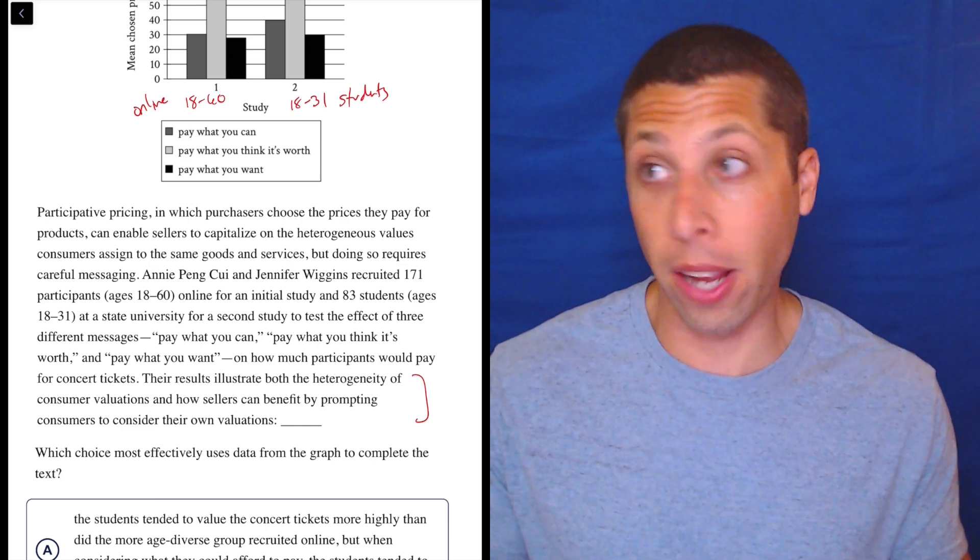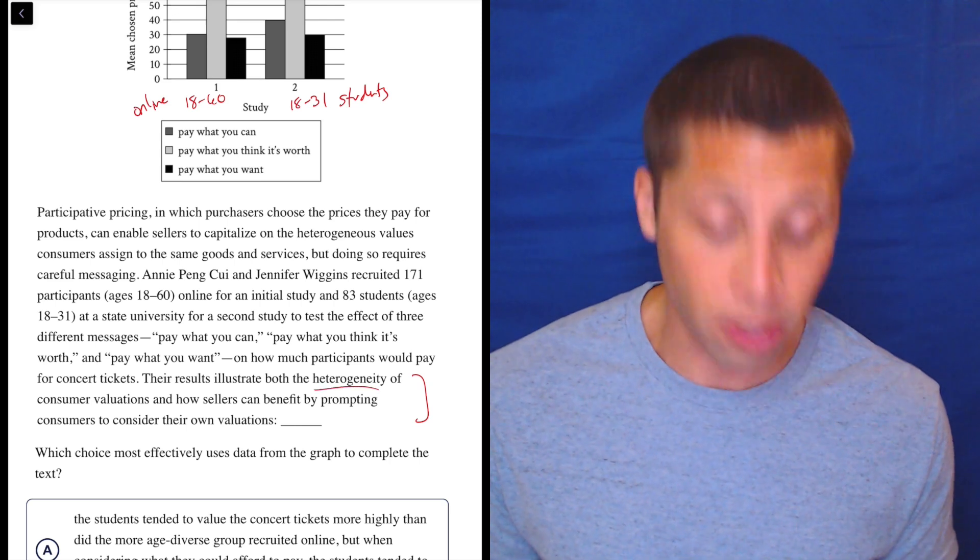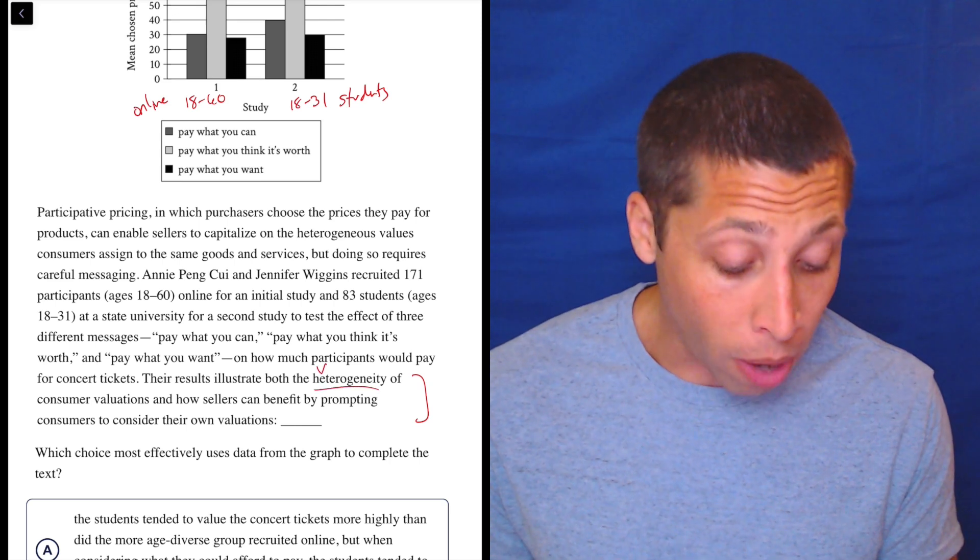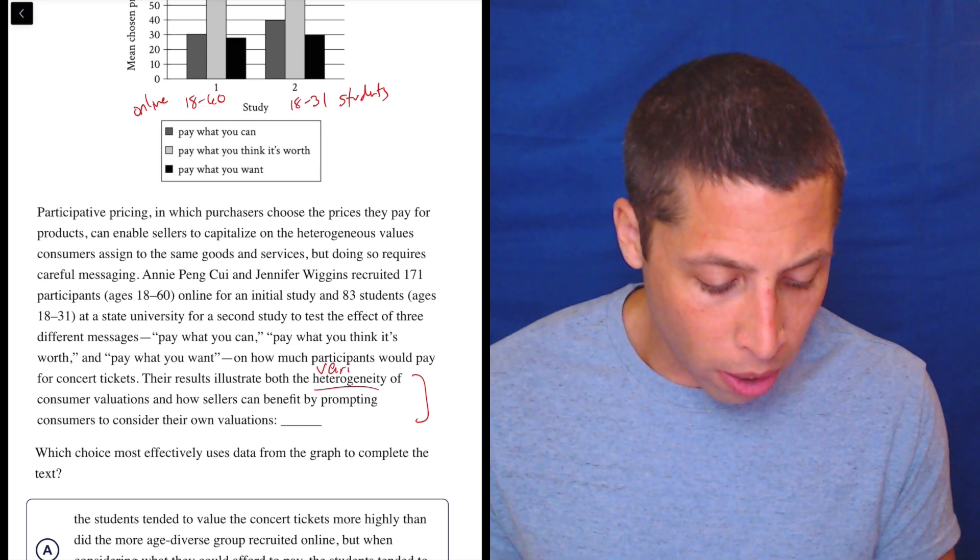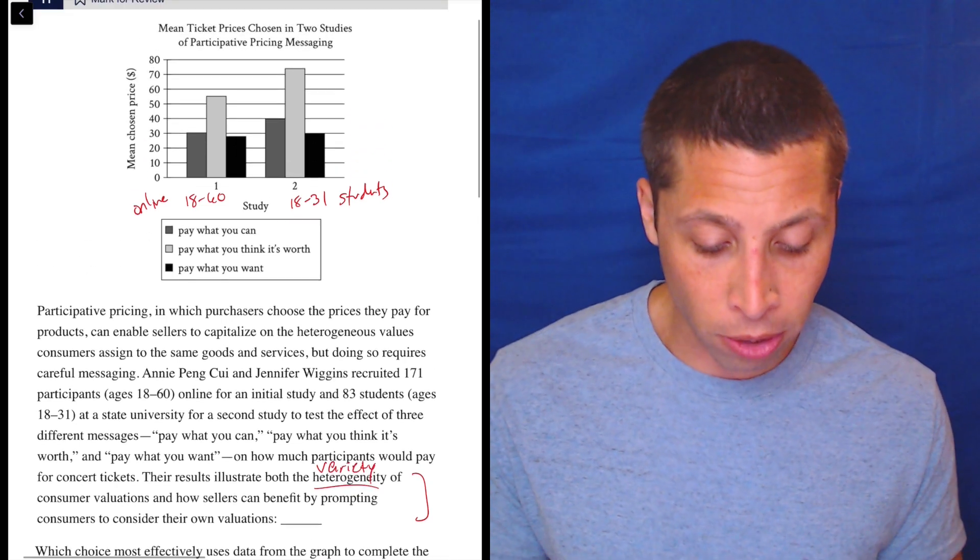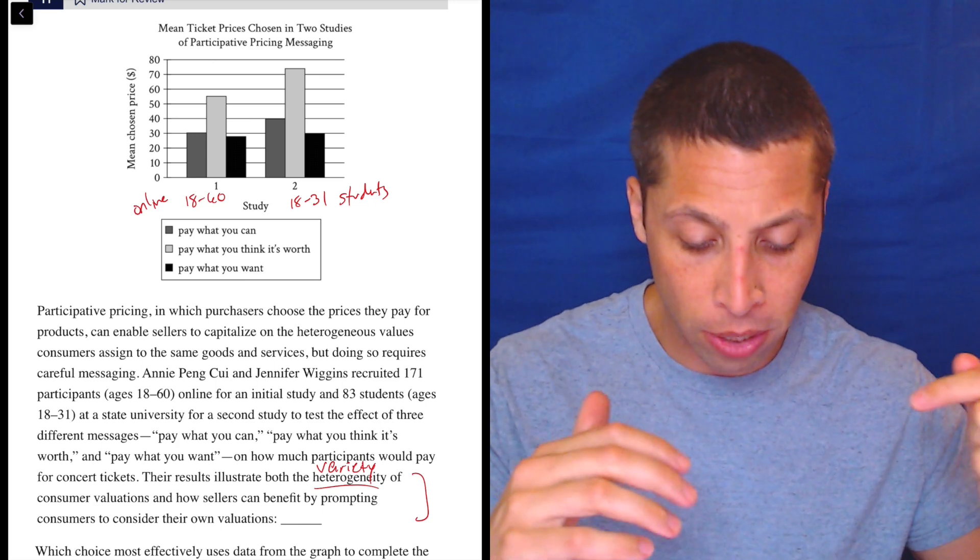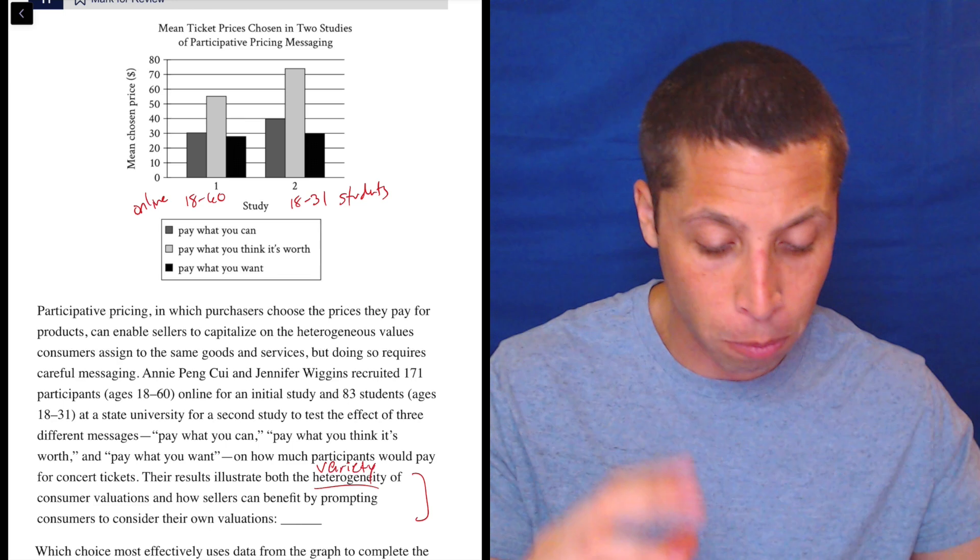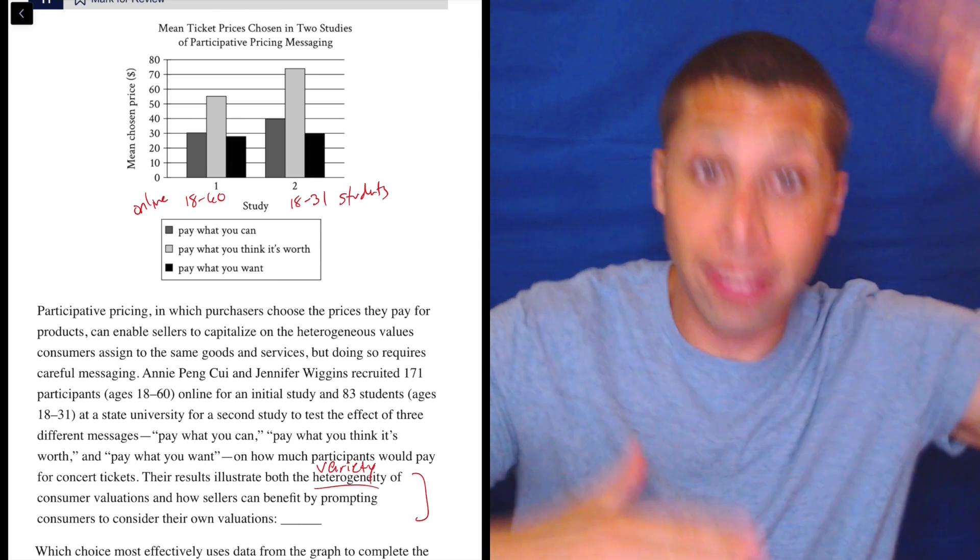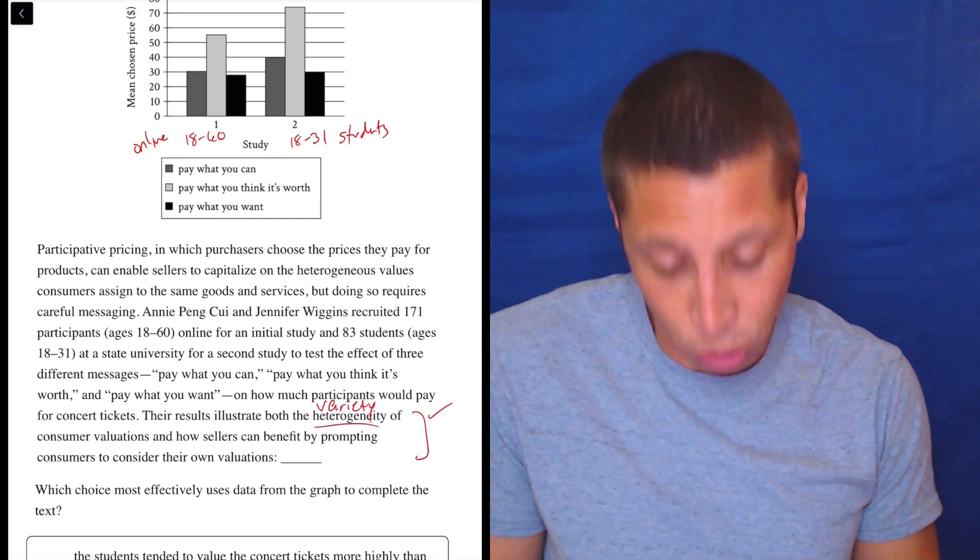So, this is a great example of why you should skip certain questions. Most of you have no idea what that's even saying, but let's talk about some words that you do need to know. Heterogeneity means variety, basically. So, it means there's a lot of difference. And if we look at the consumer valuations, look, even in both groups, there's a lot of difference. It goes from 30 or 27 all the way up to 55 for the first group, and then even higher for the second. So, there's different—basically, the rectangles are different heights. That's basically what this is saying.